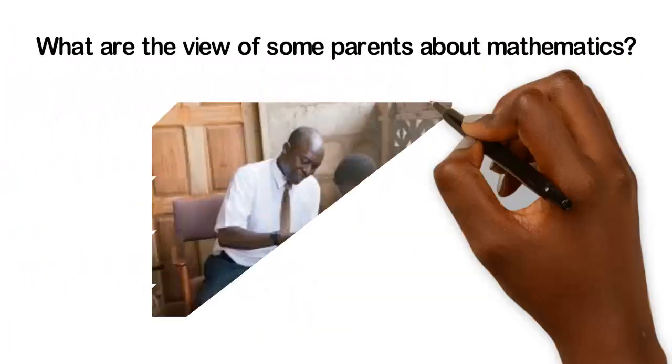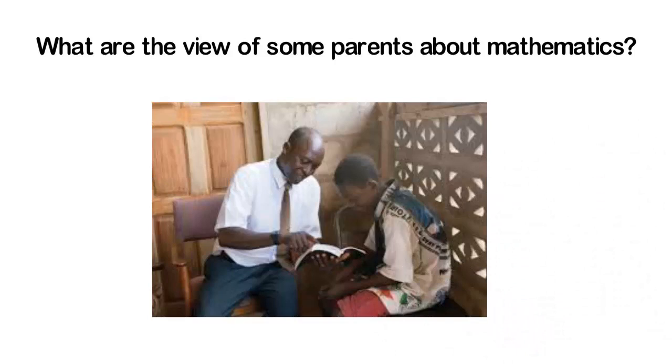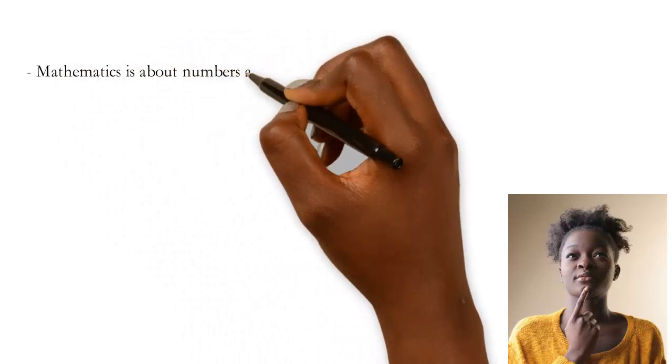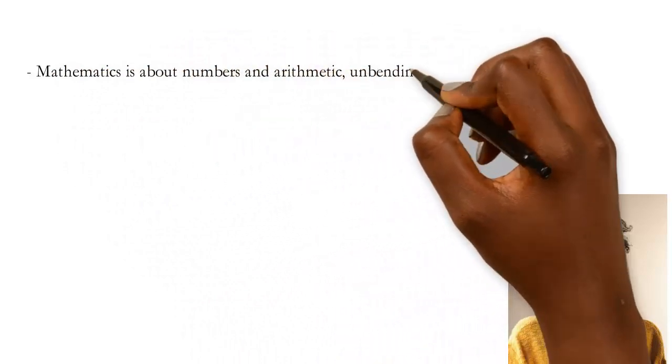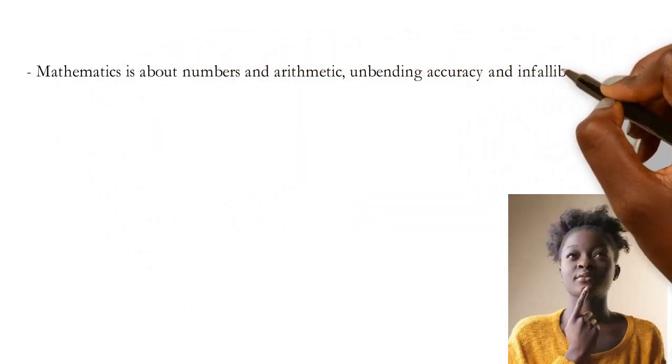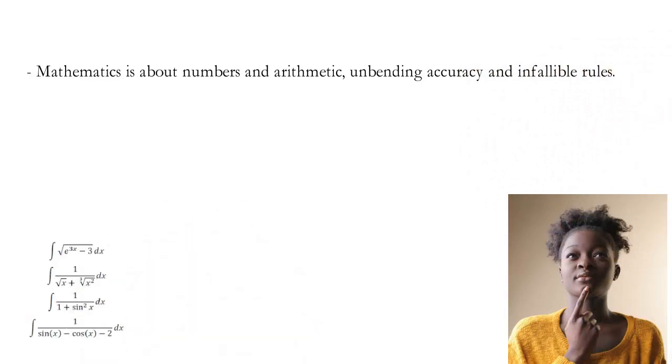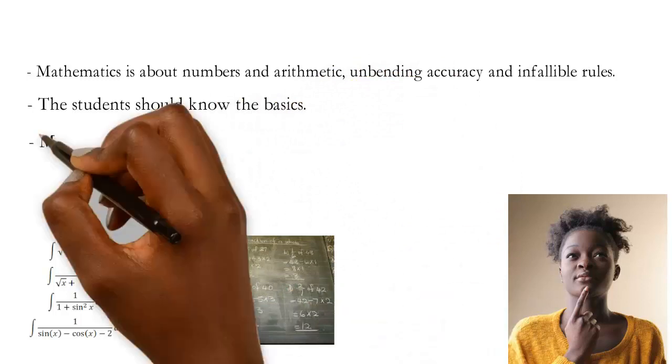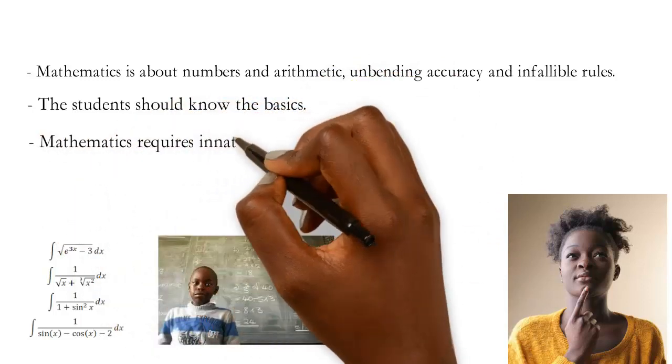What are the views of some parents about mathematics? Like students, parents also have a set of opinions about the nature of mathematics. This is what some of them think about mathematics: Mathematics is about numbers and arithmetic, unbending accuracy and infallible rules. The students should know the basics. Mathematics requires innate ability and is difficult.